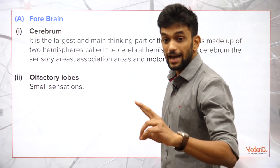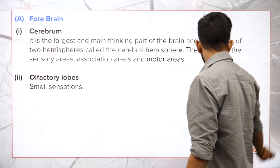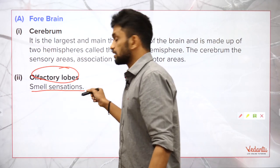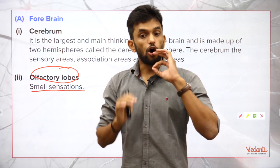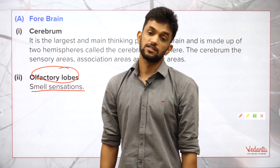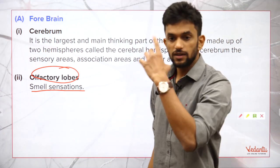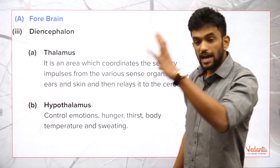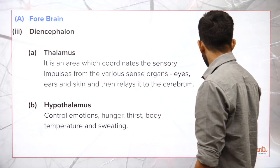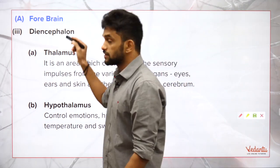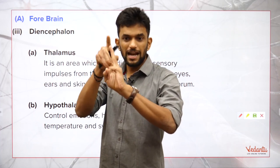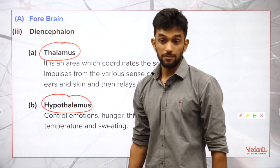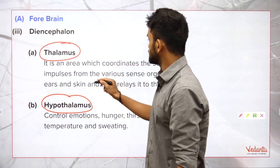The second part of the forebrain is the olfactory lobes. Olfactory means related to the sensation of smell. The third part of the forebrain is the diencephalon, which consists of two parts: the thalamus and the hypothalamus.